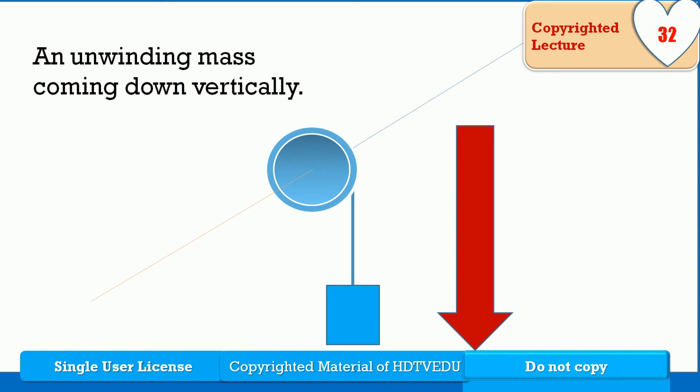An unwinding mass coming down vertically. So if the mass moves down vertically, the motion of the mass is linear motion.